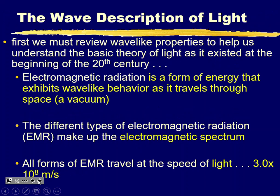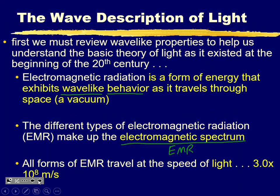Let's review some wave information. Electromagnetic radiation is a form of energy that exhibits wave-like behavior as it travels through space or a vacuum. The different types are on the electromagnetic spectrum, labeled EMR for short. All forms of EMR, whether radio waves or gamma rays, travel at the speed of light — 3.0 times 10 to the eighth meters per second.